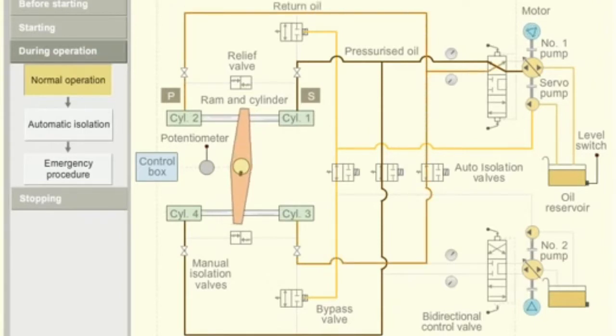When the rudder reaches the starboard position, the potentiometer sends a signal to the control box. The control box sends a signal to the bi-directional control valve. The valve is pushed back to its initial position. This blocks the oil flow and stops the movement of the ram.